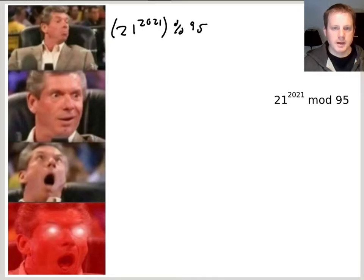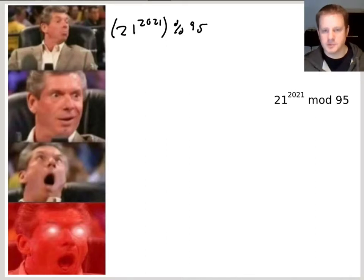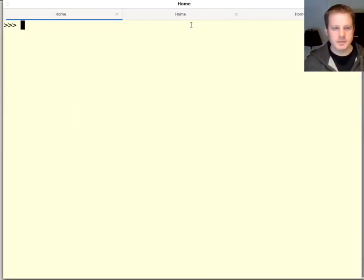The first way is we just compute this number as a huge integer. So mathematically what we're doing is 21 to the 2021 mod 95. And in many programming languages, we couldn't do this. But in Python, we can do it very easily. We could do it in other programming languages, but we would have to use another library or something. But in Python, we can compute these huge numbers.